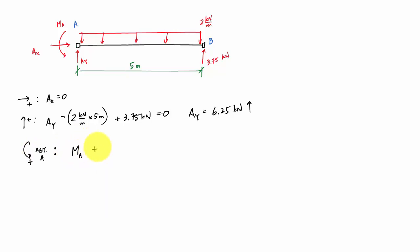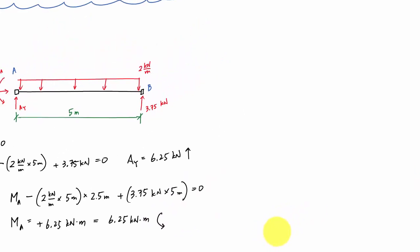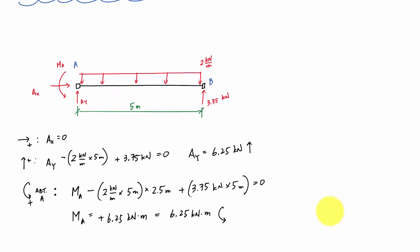And if I take moments about A, then I would get MA plus MA minus 2 kilonewtons per meter times 5 meters, that's the force resultant, times the arm of 2.5 meters plus 3.75 kilonewtons times 5 meters equals 0. And this would give me that MA is equal to plus 6.25 kilonewtons meters. Hey, I didn't plan that to have the same magnitude. Who knew? And this is 6.25 kilonewtons meters. The positive just indicates that the direction in which I drew the free body diagram is good. So it's going this way. That's all my support reactions. And if you know all your support reactions, guess what you can do? You can draw the shear moment diagrams.